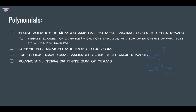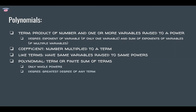A polynomial is a term or a finite sum of terms, and the powers are only whole powers — you can't have square roots or negative powers. The degree of a polynomial is the greatest degree of any term. A monomial is a one-term polynomial, a binomial is two terms, and a trinomial is three terms.